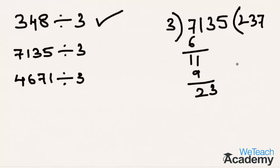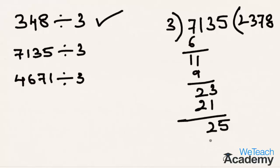Now 3 times 7 is 21, and 23 minus 21 is 2. Bringing down the last digit, that is 5, we get 25. 3 times 8 is 24, and 25 minus 24 is 1. So we get remainder as 1. Hence we can say that 7135 is not exactly divisible by 3.